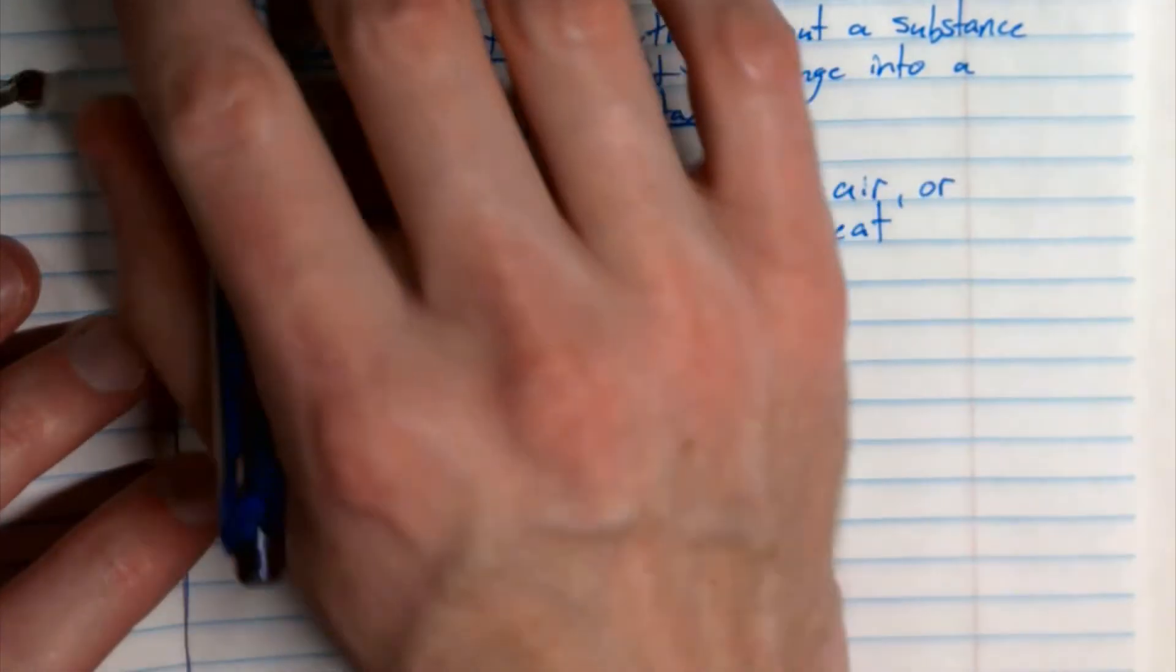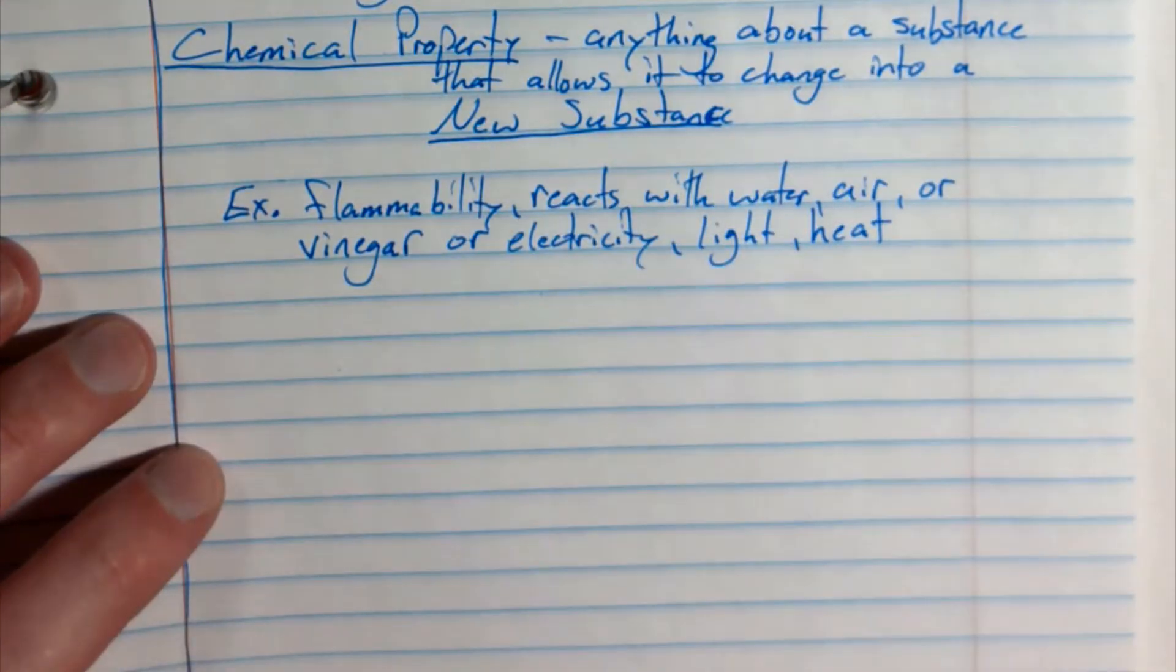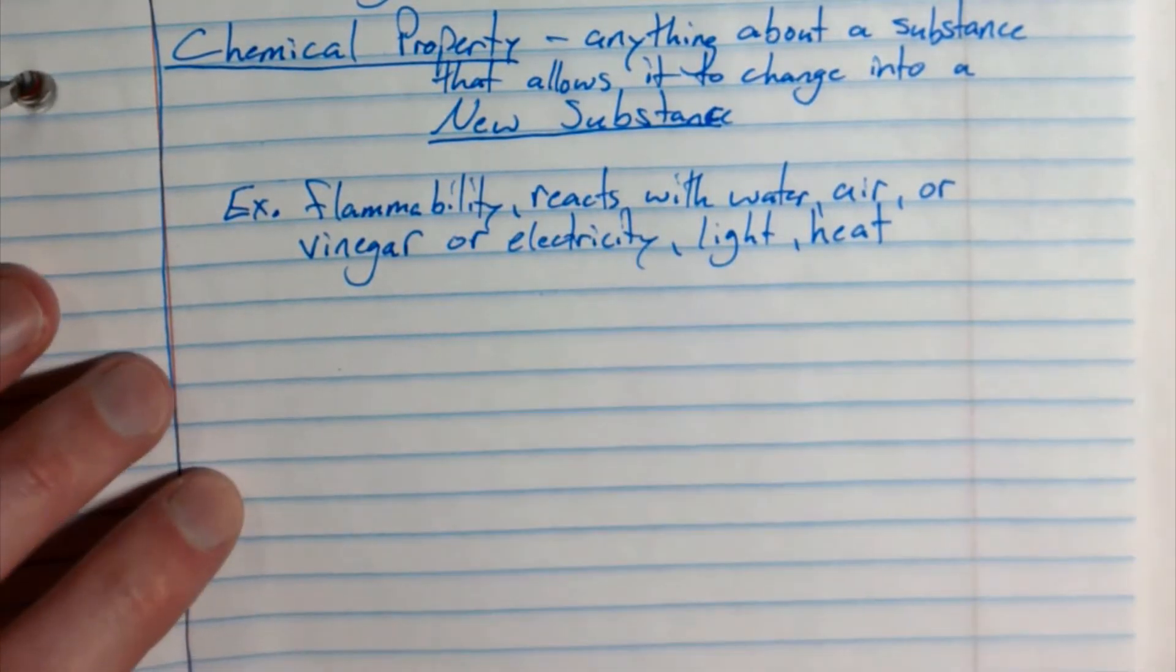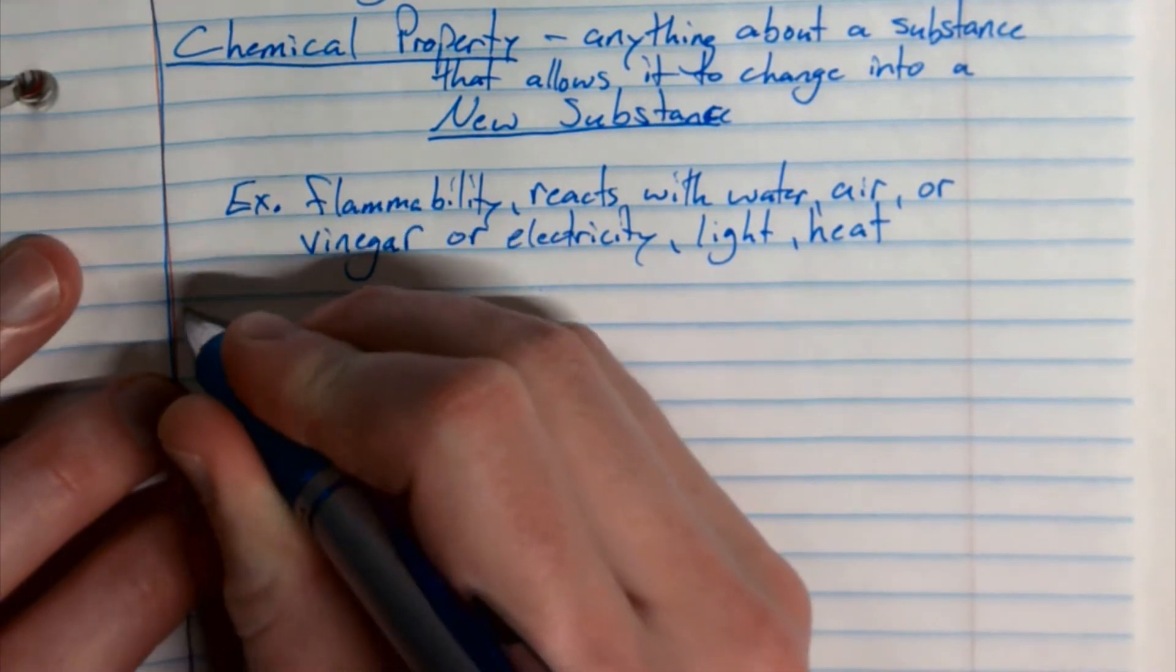And it might not do what it's supposed to do. It could be not as effective or it could be too effective and it could actually hurt you. So that's why it's important to follow those instructions. Alright. So now we have physical and chemical properties. But what about physical and chemical changes? So that's our next set.